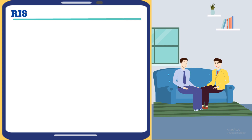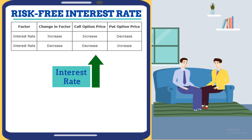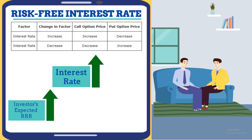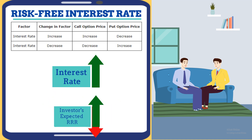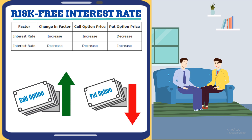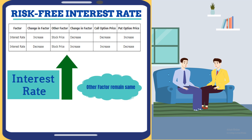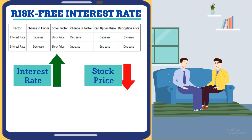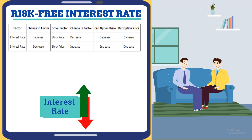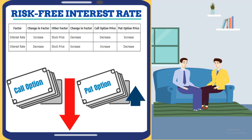What about the risk-free interest rate? Well, technically speaking, when overall interest rates increase, two things happen. Firstly, investors' expectations of their required rate of return increase. And secondly, the present value of expected cash flow to the option holder decreases due to a higher discounting rate. These two factors together make call options costlier and decrease the value of put options. However, this relationship is a bit hazy because we assume that an interest rate increases with all other factors remaining the same. But in reality, these factors do not remain the same. When the interest rate increases, the stock price decreases. So if we take both the increase in interest rates and the decrease in stock prices into account, it will decrease the value of call options and increase the value of put options.